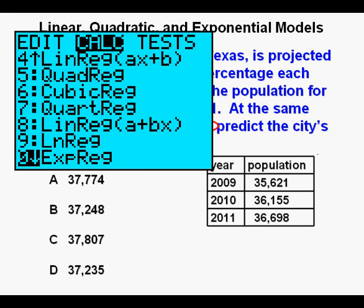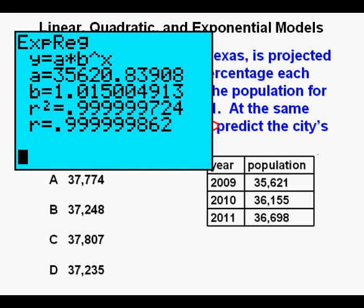Scroll down to Exponential Regression, number 0, press ENTER. Press ENTER again. We get a starting point of about 35,621, and we get a base of 1.015, which is an increase rate of 1.5%.